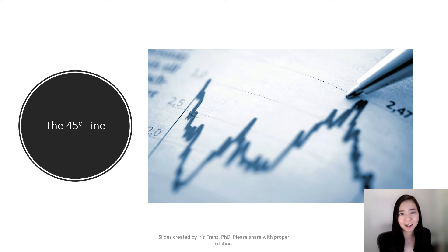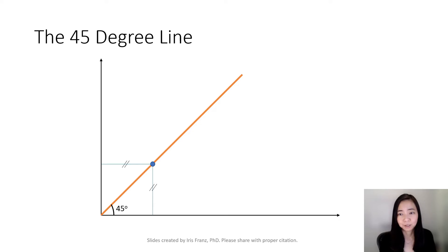We are going to talk about the 45-degree line. What is the meaning of the 45-degree line? The 45-degree line is this: when you are on this line, the distance from this line to the horizontal axis is equal to the distance between this line and the vertical axis. The length here is equal to the length here.